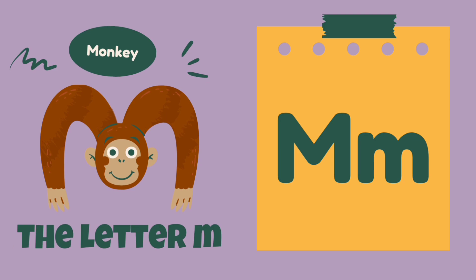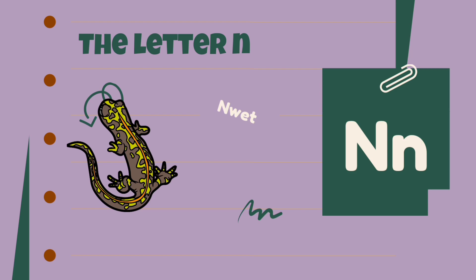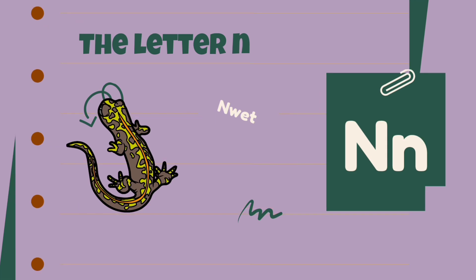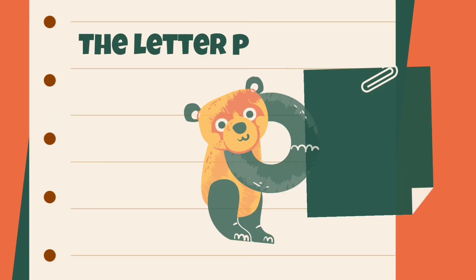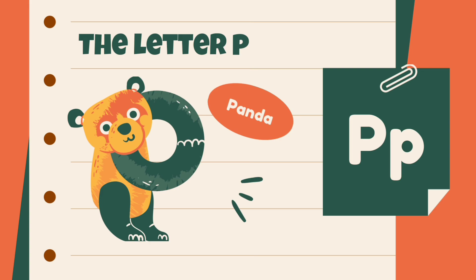M is for monkey, monkey. N is for newt, newt. O is for ox, ox. P is for panda, panda.